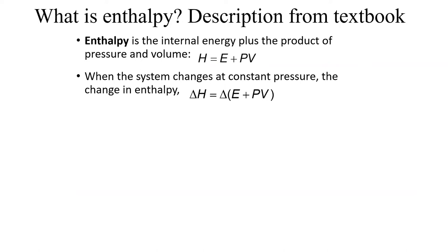So, if a system changes at constant pressure, the change in enthalpy is delta H, which equals the change in the other side of the equation. While we're working at constant pressure, we can distribute the delta to the E and to the V that were inside the parentheses.